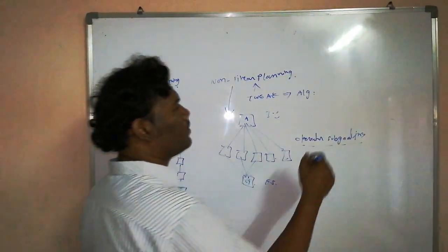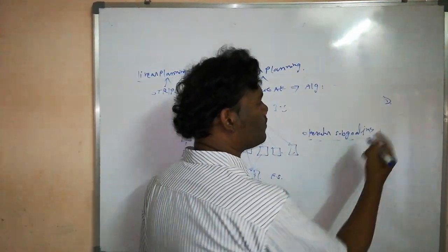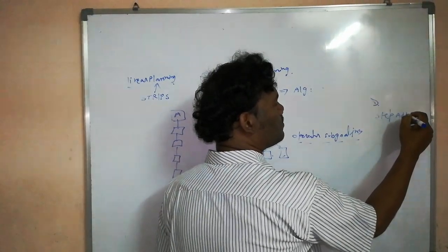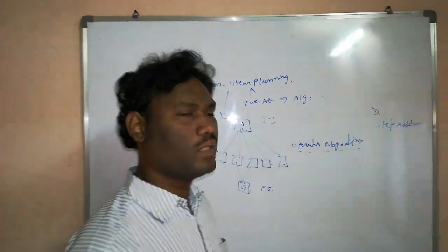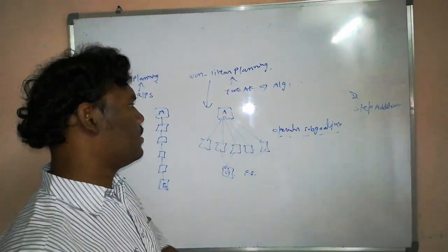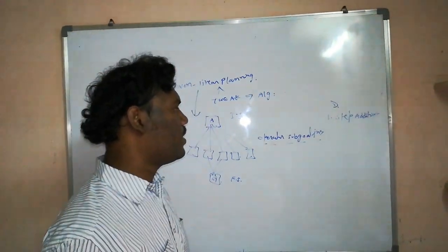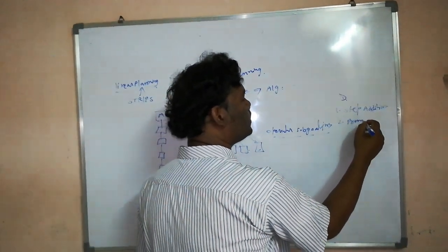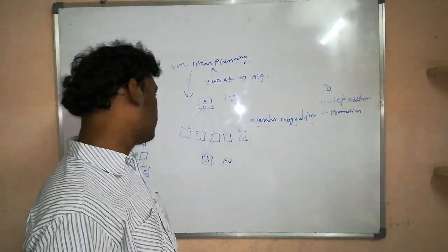In the case of the TWEAK algorithm, there are five steps to consider. The first one is step partition — meaning we start the problem and execute it from initial state to the final state. The second one is promotion, which means we are creating new steps to solve the problem.